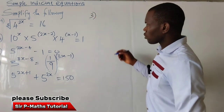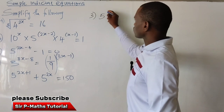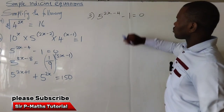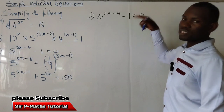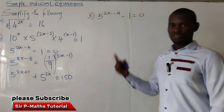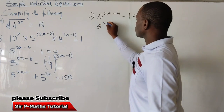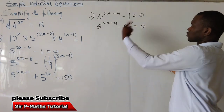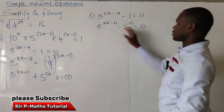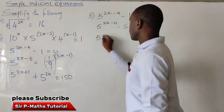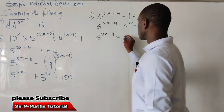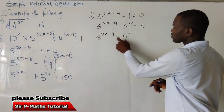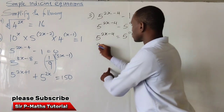For the third one, we have 5 raised to the power of 2x minus 4, minus 1, equal to 0. I will change this 1 into a base of 5 with a power of 0, since any number raised to the power of 0 is 1. So I have 5 raised to the power of 2x minus 4, minus 5 raised to the power of 0, equal to 0. Moving 5 raised to power 0 across the equality sign gives 5 raised to power 2x minus 4, equal to 5 raised to power 0. The bases are equal, so we equate the powers.